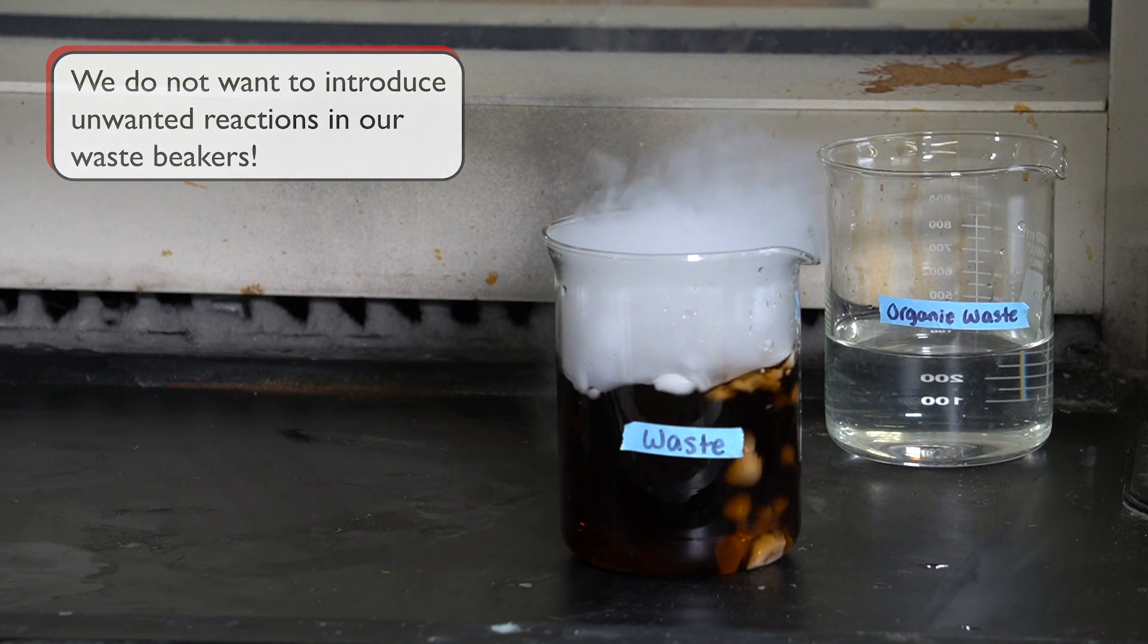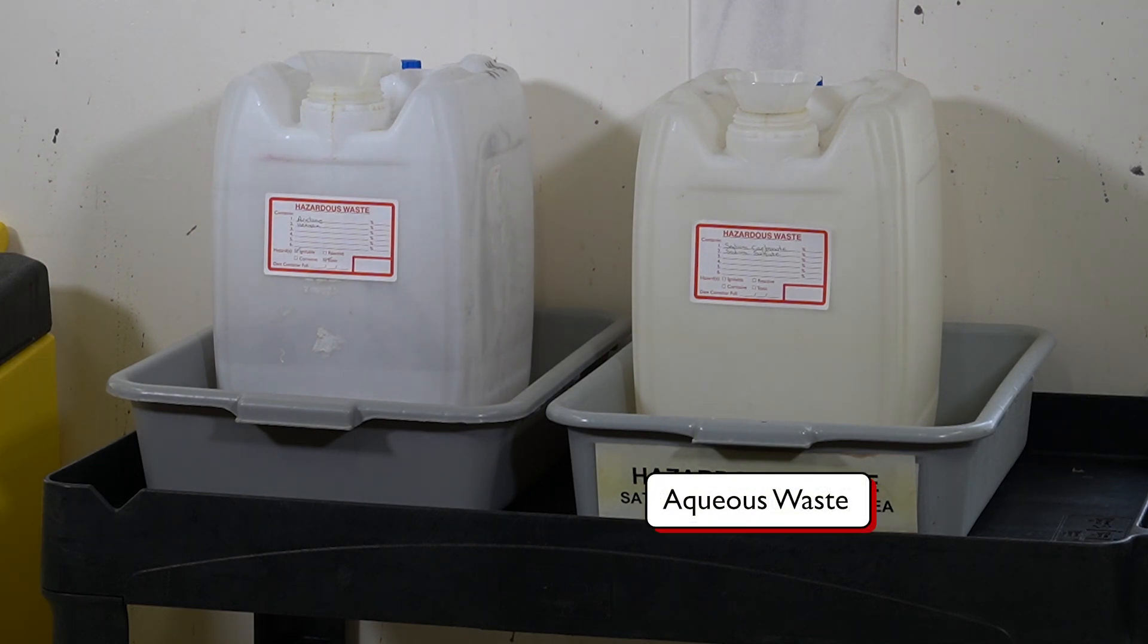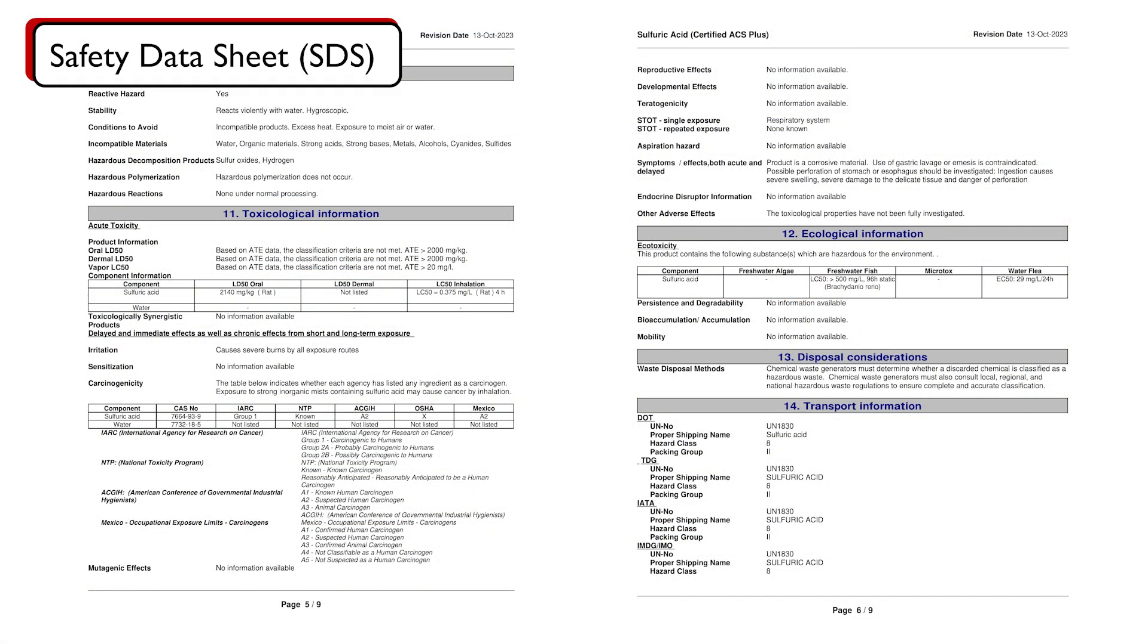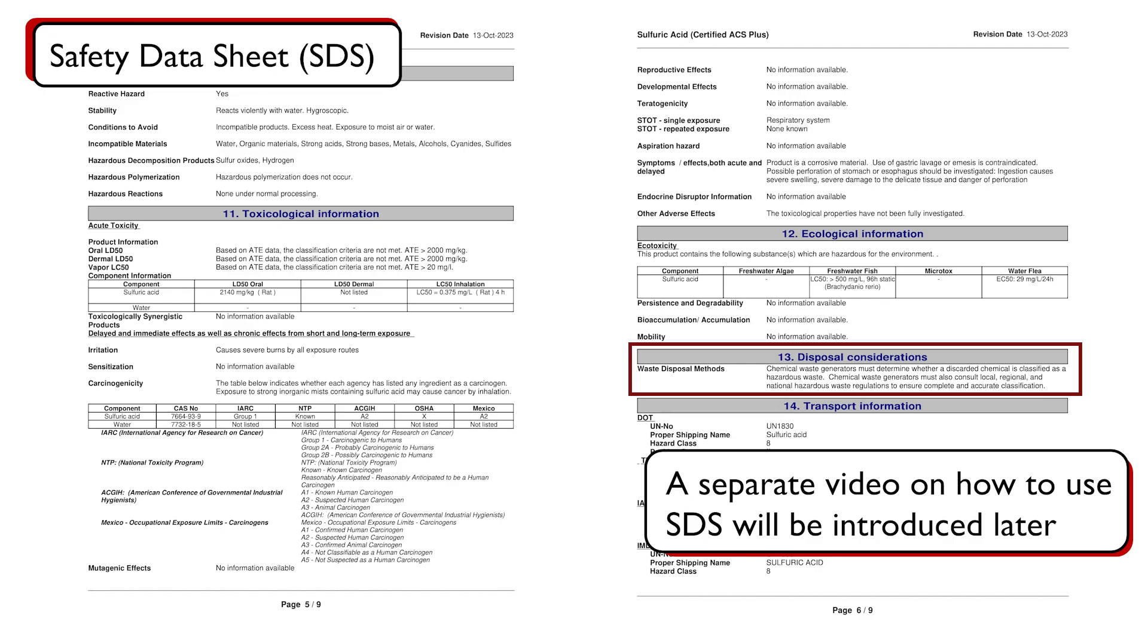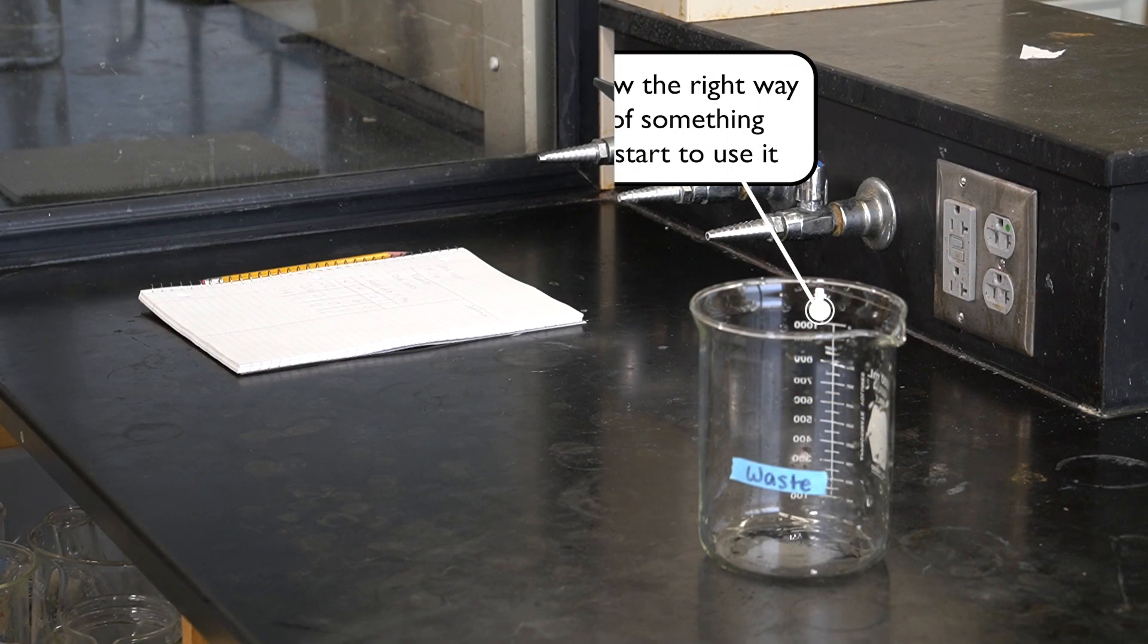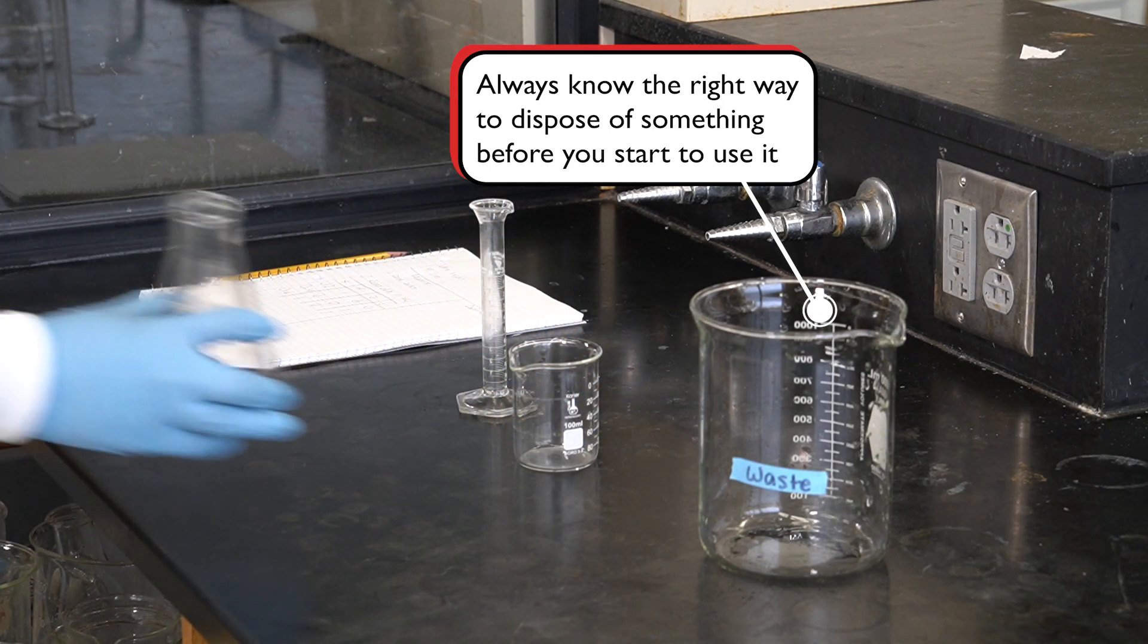Two of the most common waste streams in our teaching labs are the aqueous waste and the organic waste. In a teaching lab, the instructor usually informs us of the types of waste streams that should be kept separately. When working independently as researchers, we can get the waste disposal information from the safety data sheet for the chemical. The rule of thumb is to always know the right way to dispose of something before you start to use it.